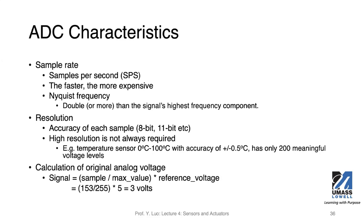Let's look at this example. We have a temperature sensor that has a range from 0 to 100 degrees Celsius, and it has an accuracy of plus-minus 0.5 degree. That means we only have 200 meaningful values in terms of degree, which corresponds to 200 meaningful voltage levels. With such a range and accuracy, what will be the required bits of the samples? So with 8 bits, you can have 256 values.